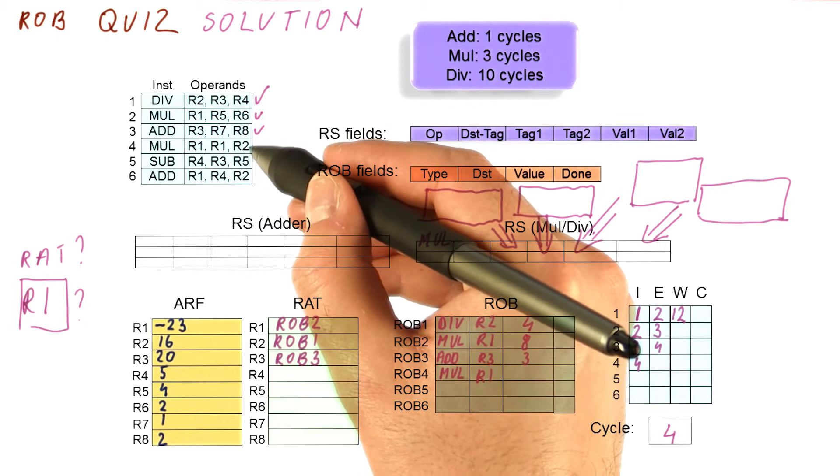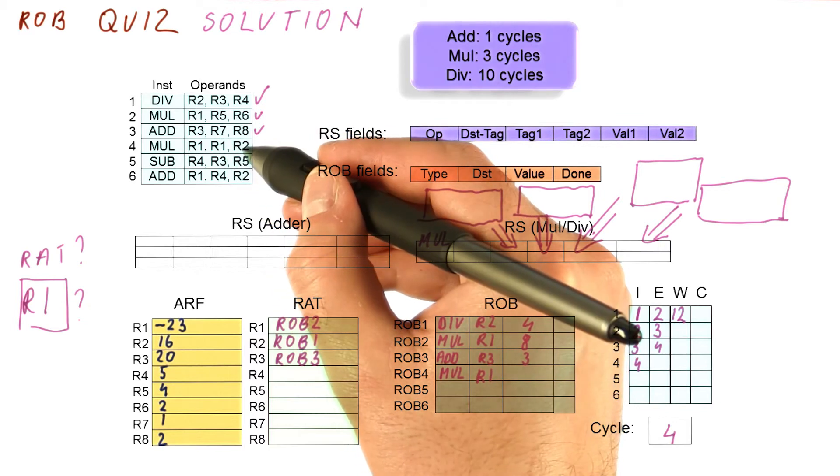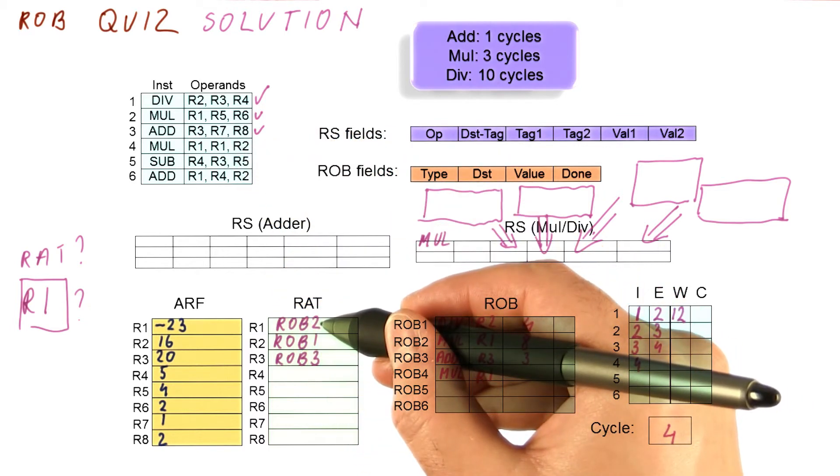we need to read out what is the RAT content for R1 and R2, and we find that it's ROB2 and ROB1.